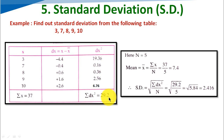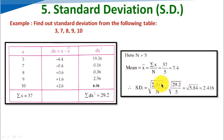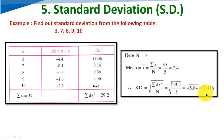Using the formula from the previous slide, standard deviation equals the square root of sigma dx squared divided by n. Here sigma dx squared is 29.2 and n is 5. So the answer is 2.416.